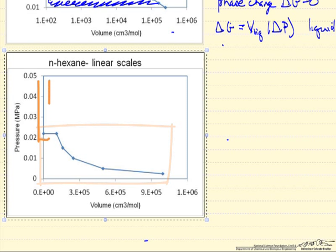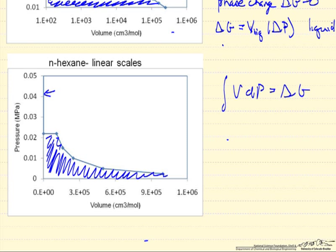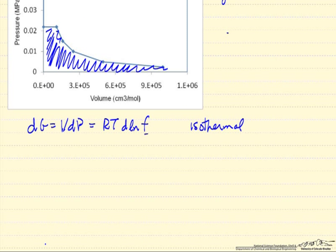And if we were calculating the change, the volume times the integral of V dP to get delta G would be this area under the curve, and then this area here is really very small, which means the Gibbs free energy does not change much when we change the pressure on the liquid.